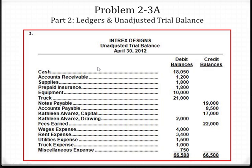Now, the tricky thing about a trial balance is that it is to prove debit-credit equality. However, it does not show every error that could potentially happen. For instance, if you recorded to the wrong account, that's not an error you may see on an unadjusted trial balance. A trial balance is to check for certain errors, but it does not reveal every error in accounting. So do not always depend on the trial balance as your 100% accuracy check.